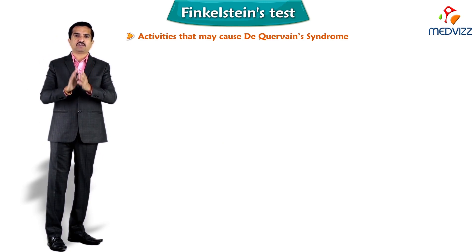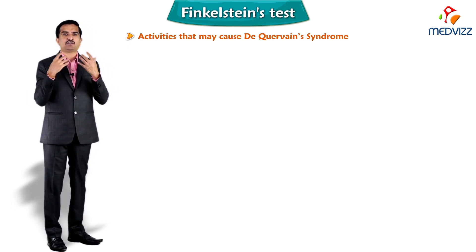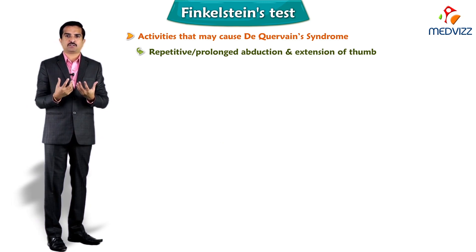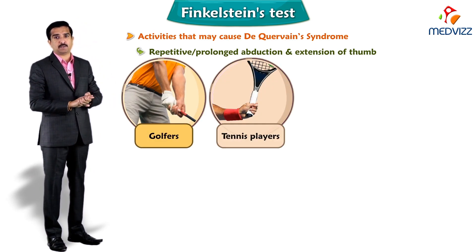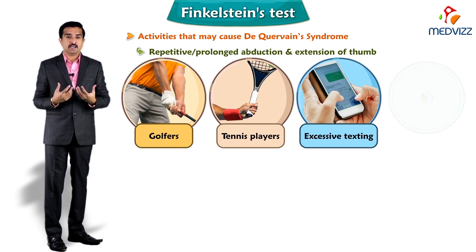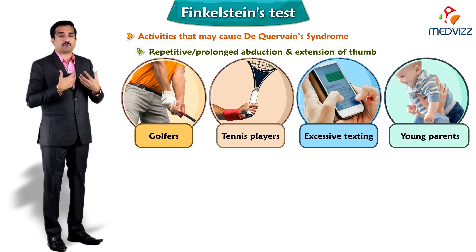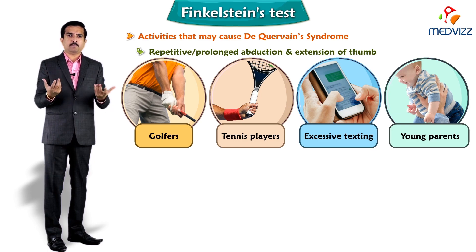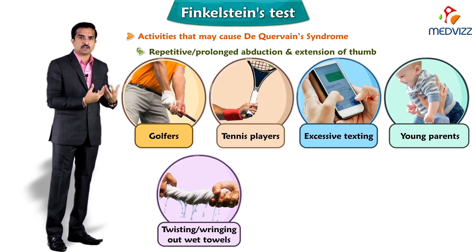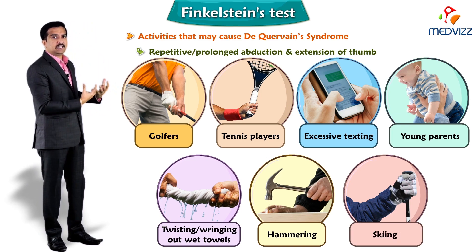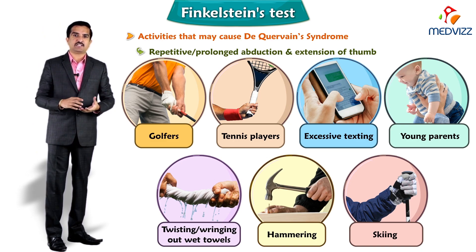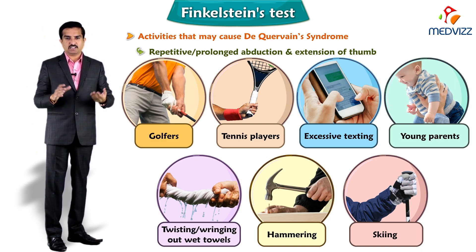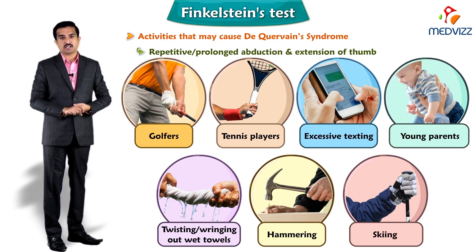Activities that may cause DeQuervain syndrome include anything involving repetitive prolonged abduction and extension of the thumb. This is often seen in golfers, tennis players, individuals who text a lot, younger parents repeatedly lifting a baby, or actions like twisting and wringing out towels, hammering, and skiing. All these actions may be responsible for the development of DeQuervain tenosynovitis.